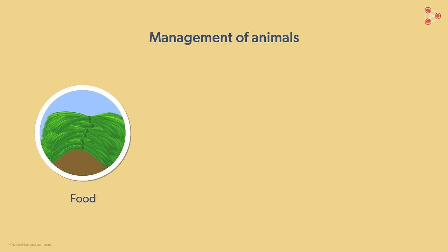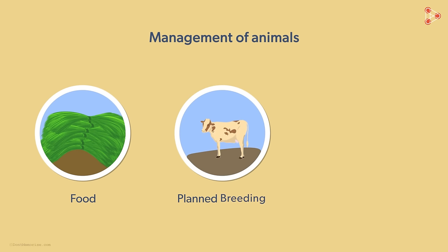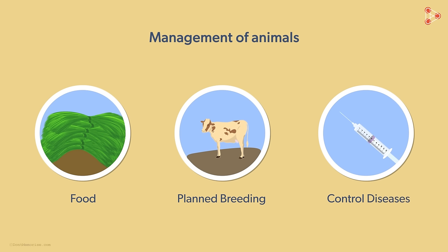The management of animals involves work in three distinct areas. Animals need to be fed, breeding of animals is planned, and diseases that attack animals must be controlled.